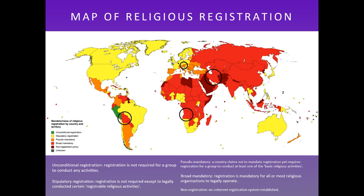This map shows registration policies by country. The countries in red practice mandatory registration, affecting most of Asia, most of Africa, and a few South American countries. While this is less of an issue in Europe, there are still ongoing registration problems there too. It just shows the breadth of these issues — this is a global matter, not limited to any one region.